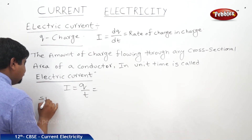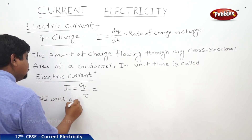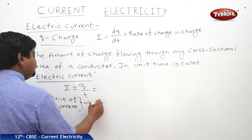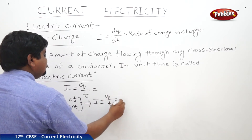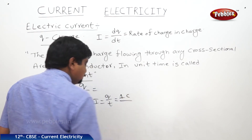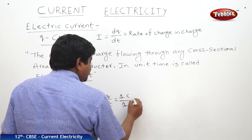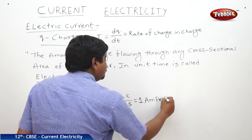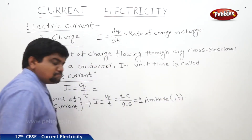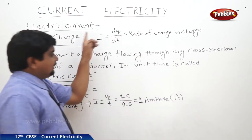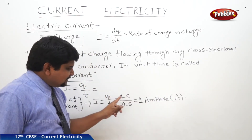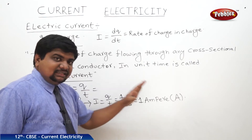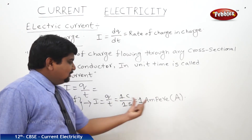What is the SI unit of current? We know that I = Q / T. The SI unit of charge is coulomb, and the SI unit of time is second. One coulomb per second equals one ampere, with symbol capital A. Ampere is the SI unit of electric current. One ampere is defined as one coulomb of charge flowing in one second through any cross-sectional area of a conductor.